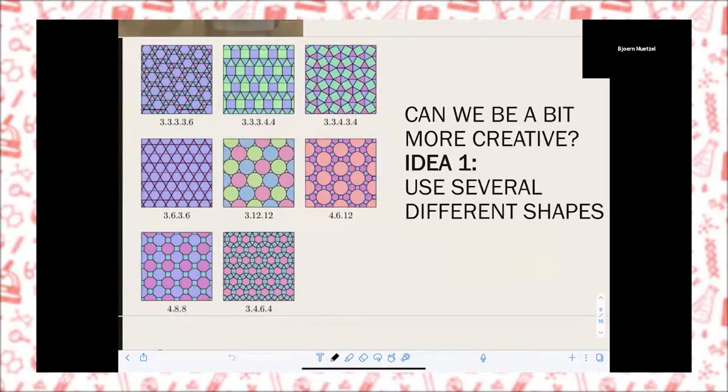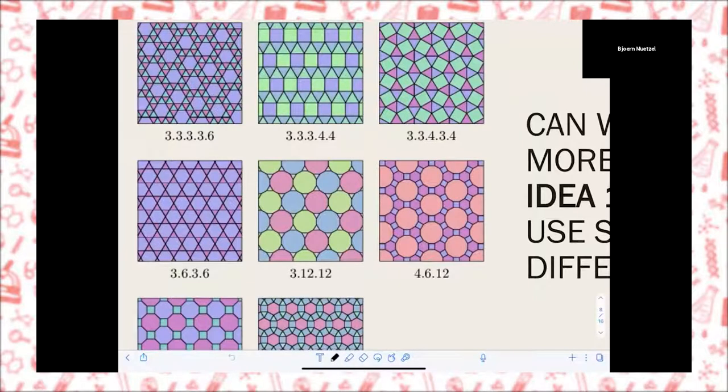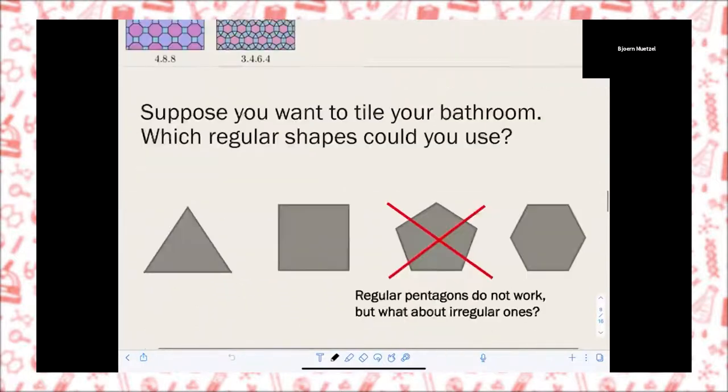People have also used more advanced tilings, or more complicated tilings, where the idea is our first idea to be more creative is to use several different shapes. Here's an example if we use several different regular polygons. There are actually eight possibilities, as you see here on the left. These are called the semi-regular tilings.